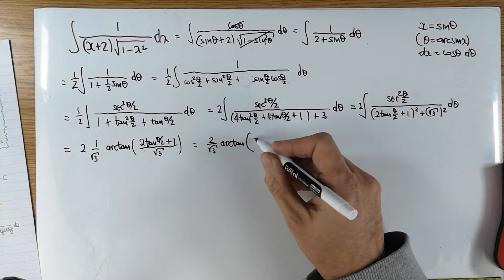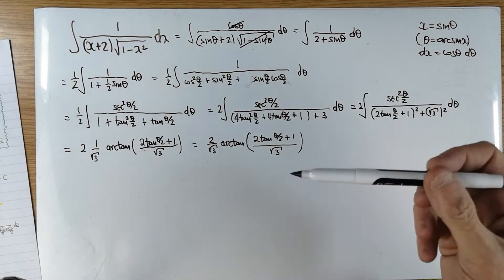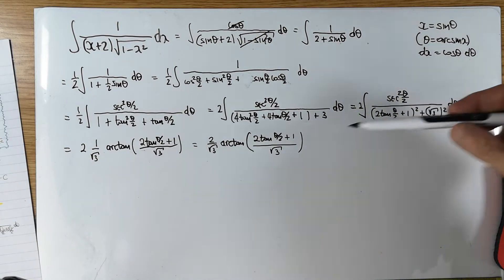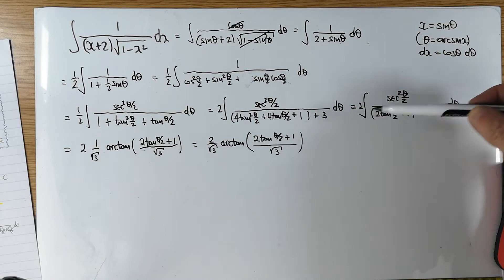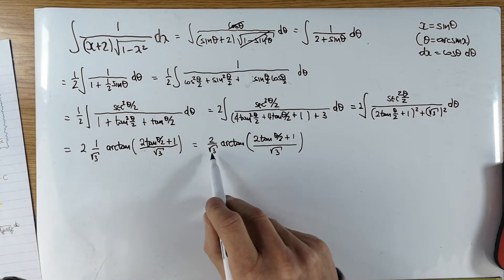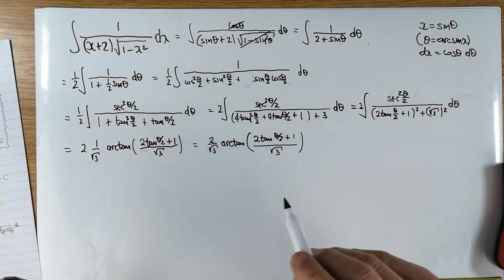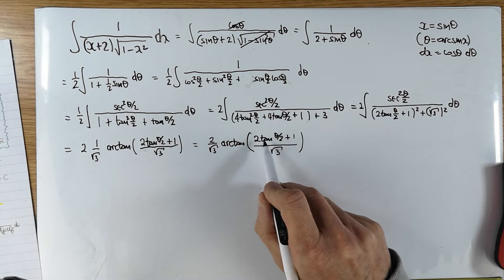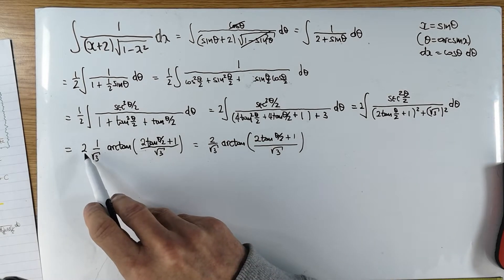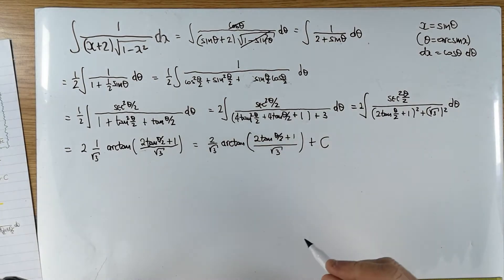I haven't finished because I need to go back to my original variable. Differentiating confirms: 1 over (this quantity squared plus 1), times 1/√3 from the formula, times the derivative of the argument producing sec²(θ/2) — with half from the chain rule and the 2 at the front cancelling. So that is my answer; I can put plus C. Going back on the substitution is going to be a total and utter mess.